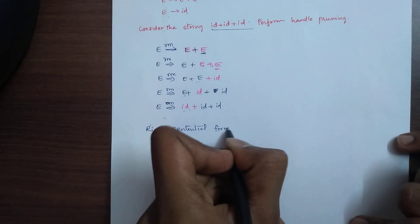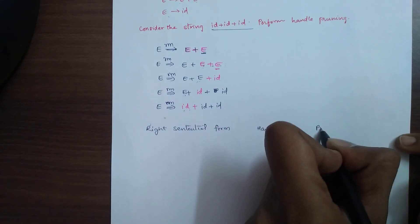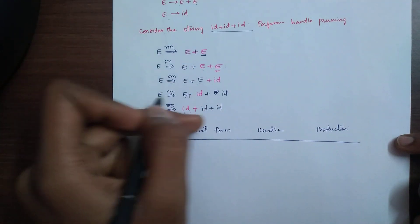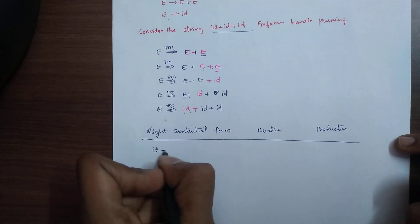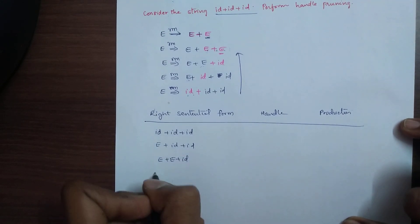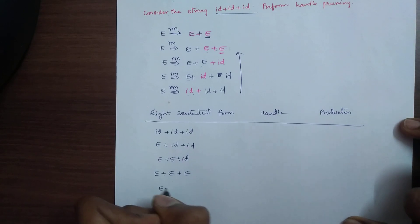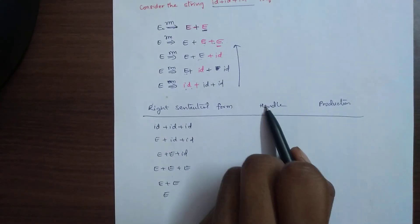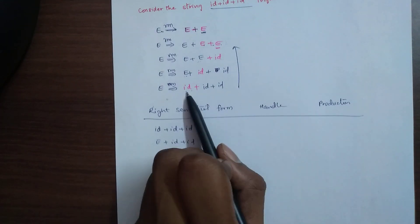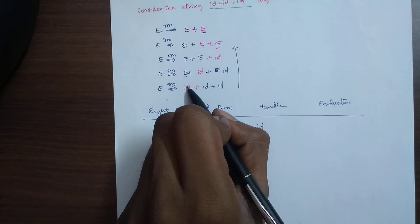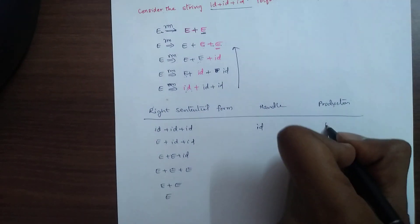Right sentential form, handle, and production. The right sentential form — the handle is identified from the rightmost derivation. The first right sentential form is E plus E plus E plus E plus E. The handle is shown in red color — id is the handle. The production is E gives id.